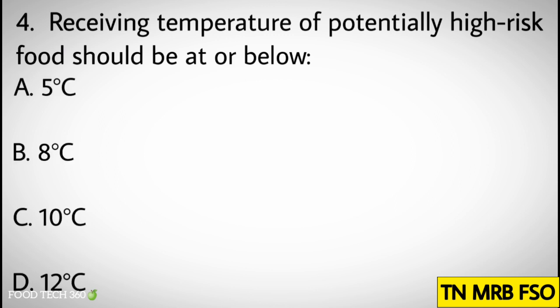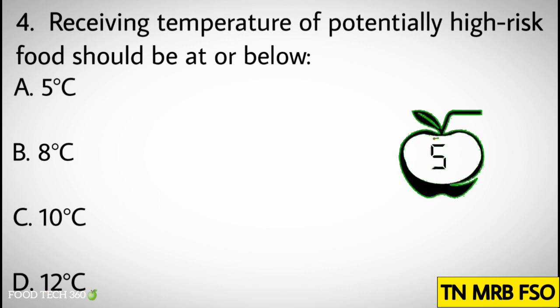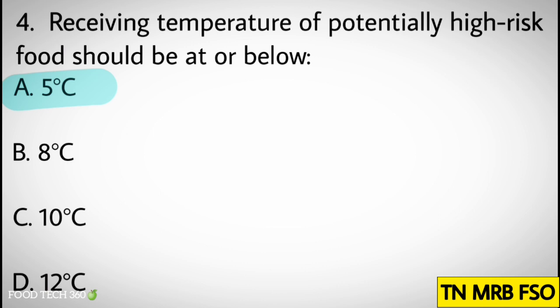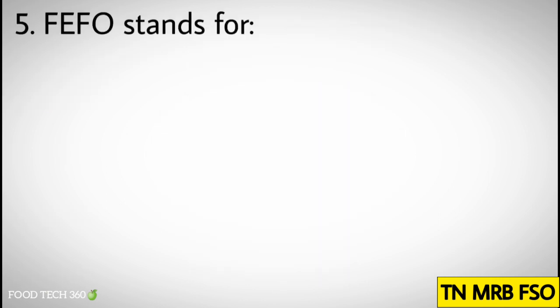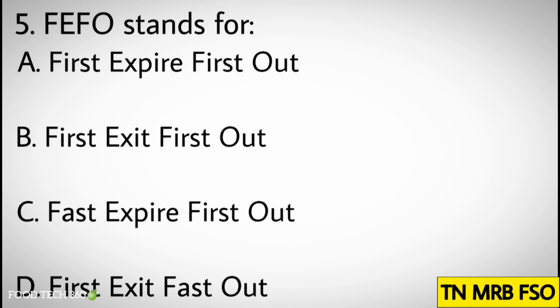Question number four: Receiving temperature of potentially high-risk food should be at or below — options: A) 5 degrees Celsius, B) 8 degrees Celsius, C) 10 degrees Celsius, D) 12 degrees Celsius. Correct answer: A) 5 degrees Celsius.